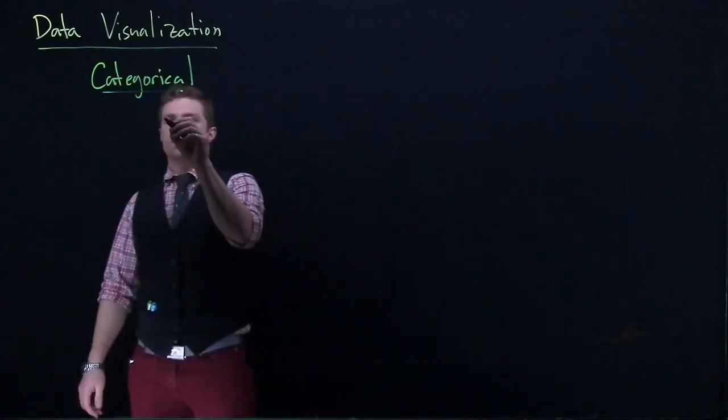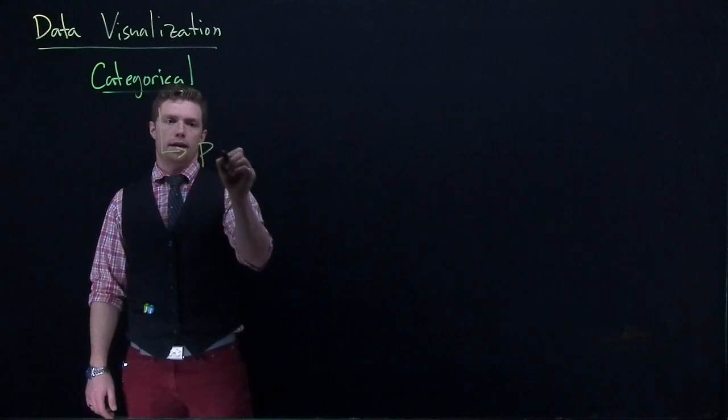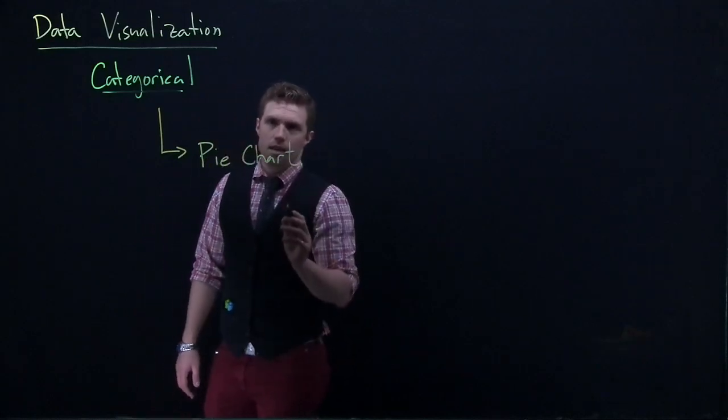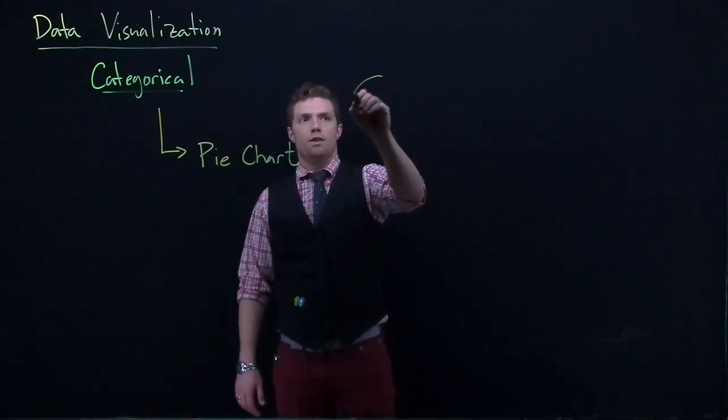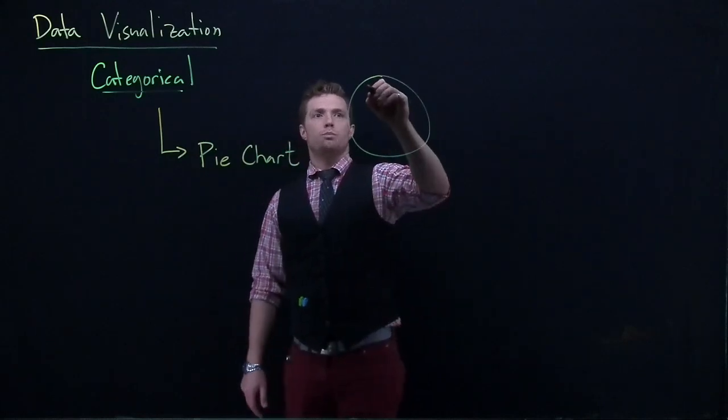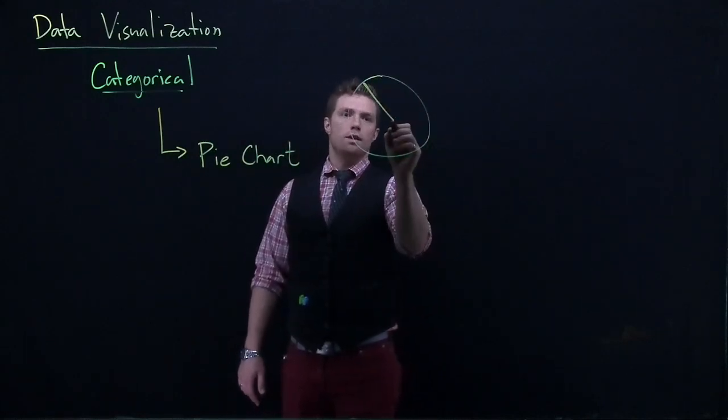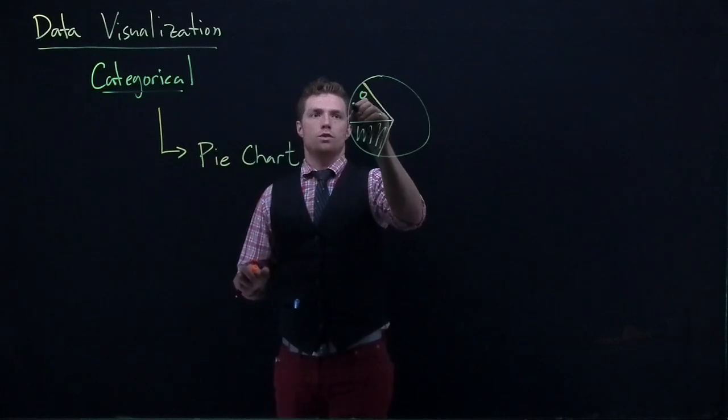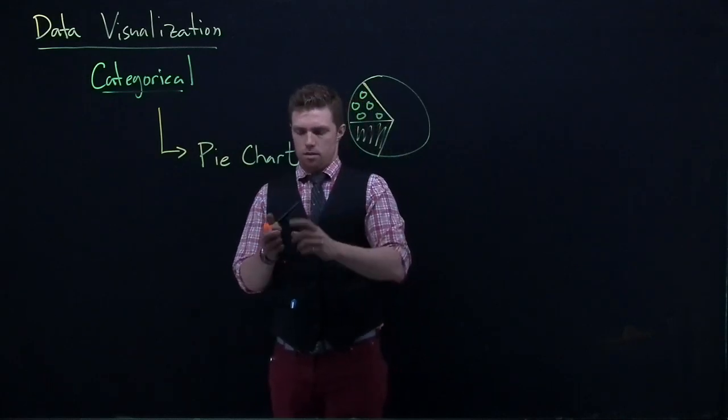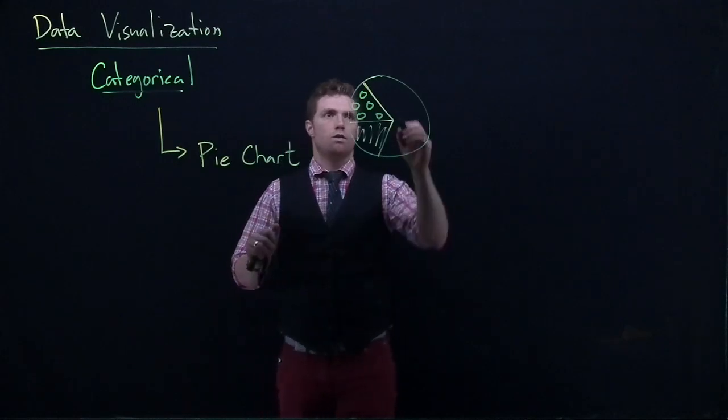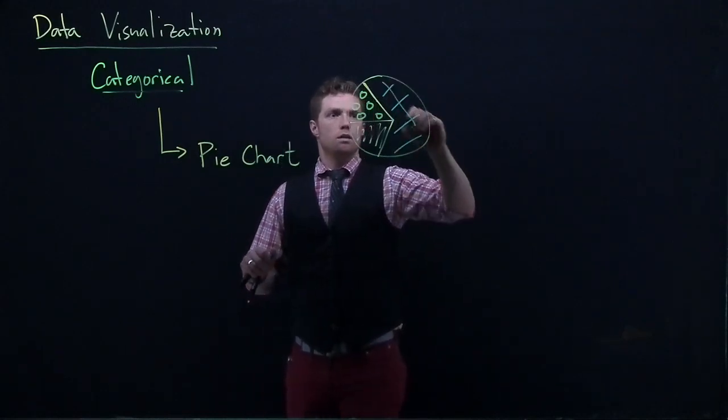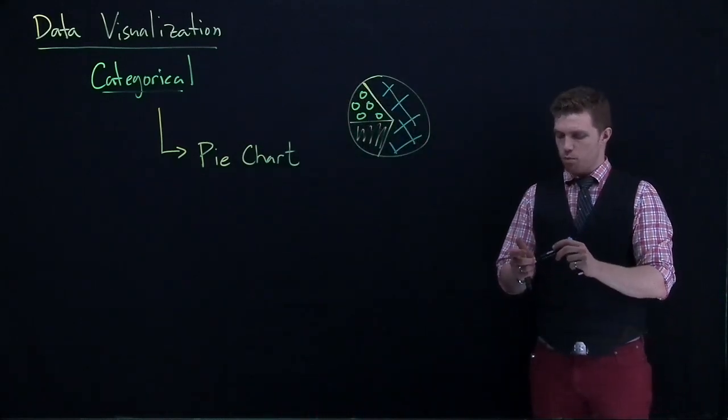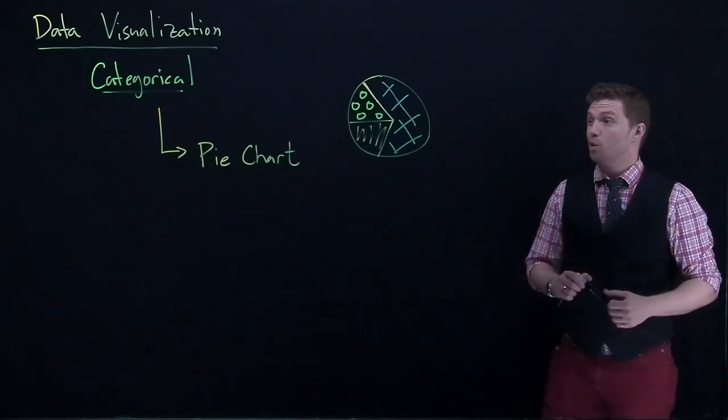And the first one that we're going to do is our trusty old pie chart or pie graph, whatever you want to call it. We'll call it pie chart. Hopefully these are really familiar to you. So we've got some sort of circle and it's broken into several pieces of a pie. So pie charts help us quickly see proportions. That's basically what they do.